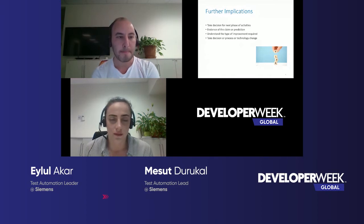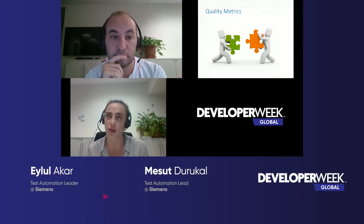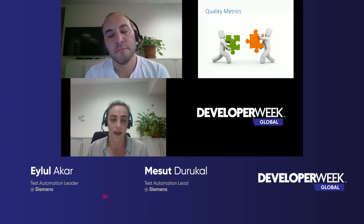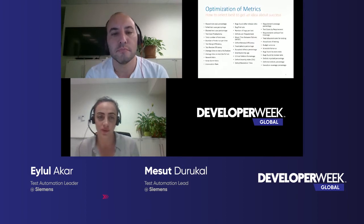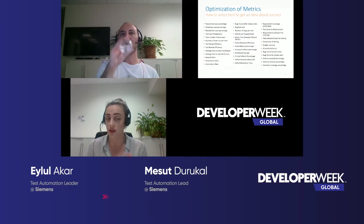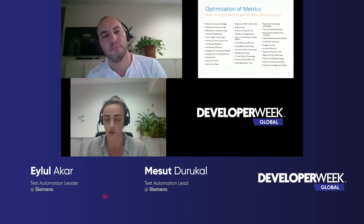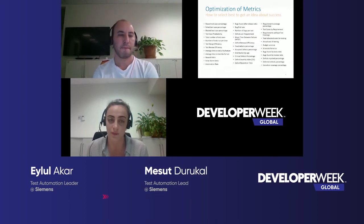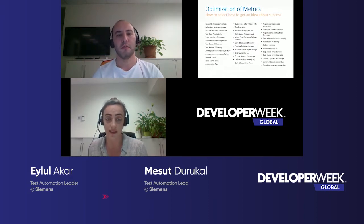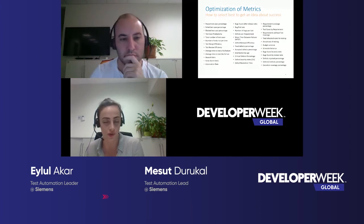Mesud has talked about some necessities and the importance of monitoring metrics. Now we are going to talk about how to customize and select quality metrics. First, the optimization of metrics — meaning how to select and start applying them. In the literature, there may be hundreds of types of quality metrics you can monitor. But the idea is that we must be wise enough to select the ones that are going to serve our goals in the best possible way. We need to have some goals, and then select the metrics that will be useful for those goals.